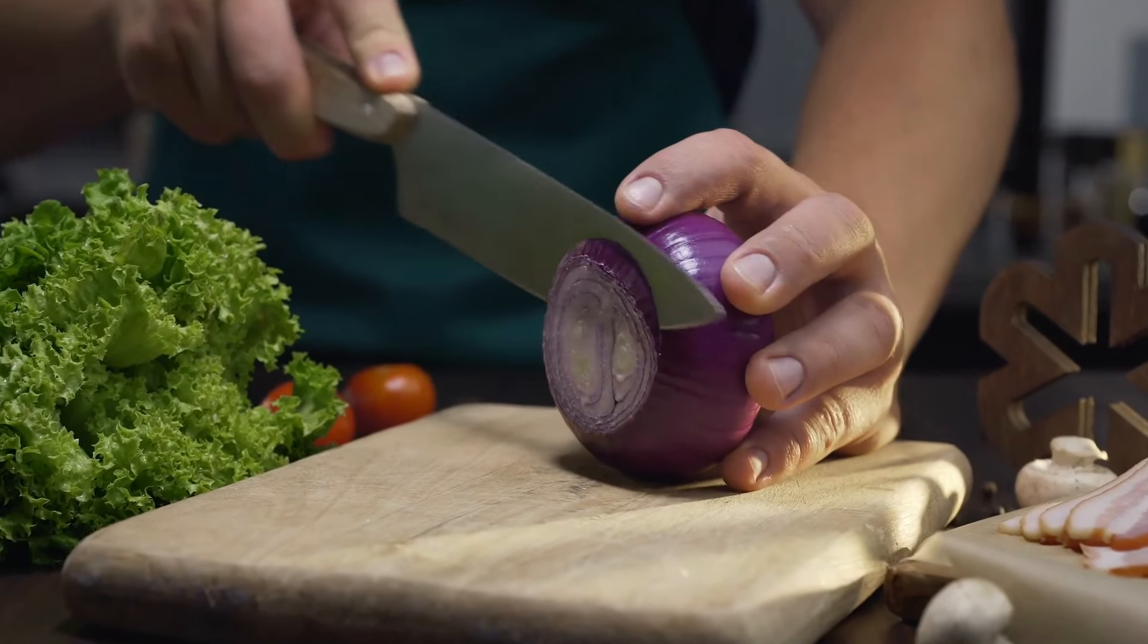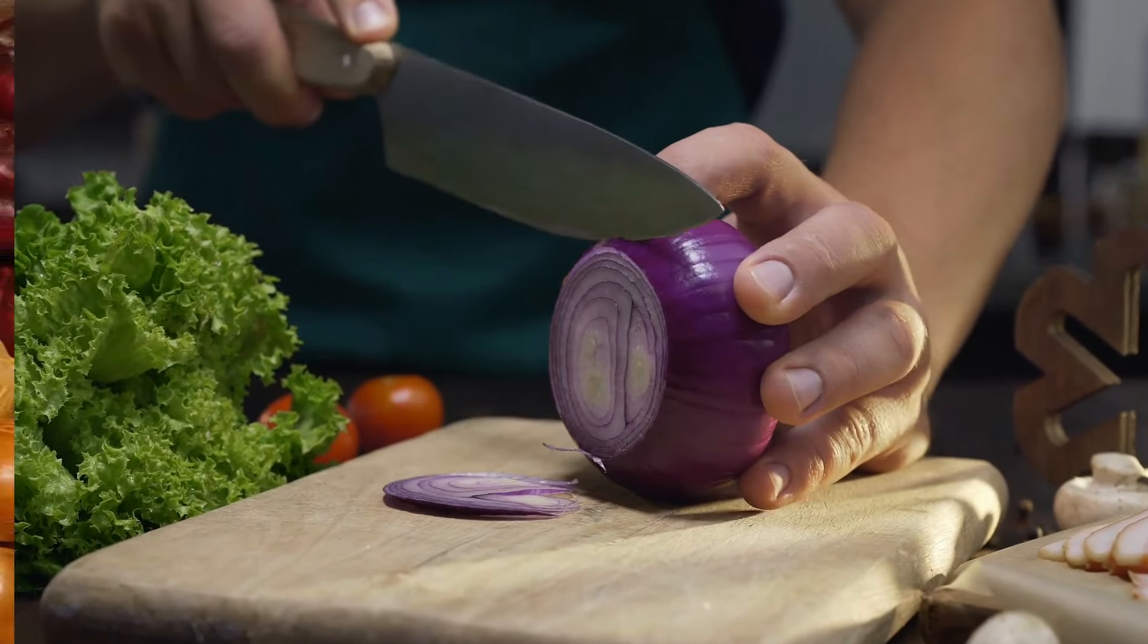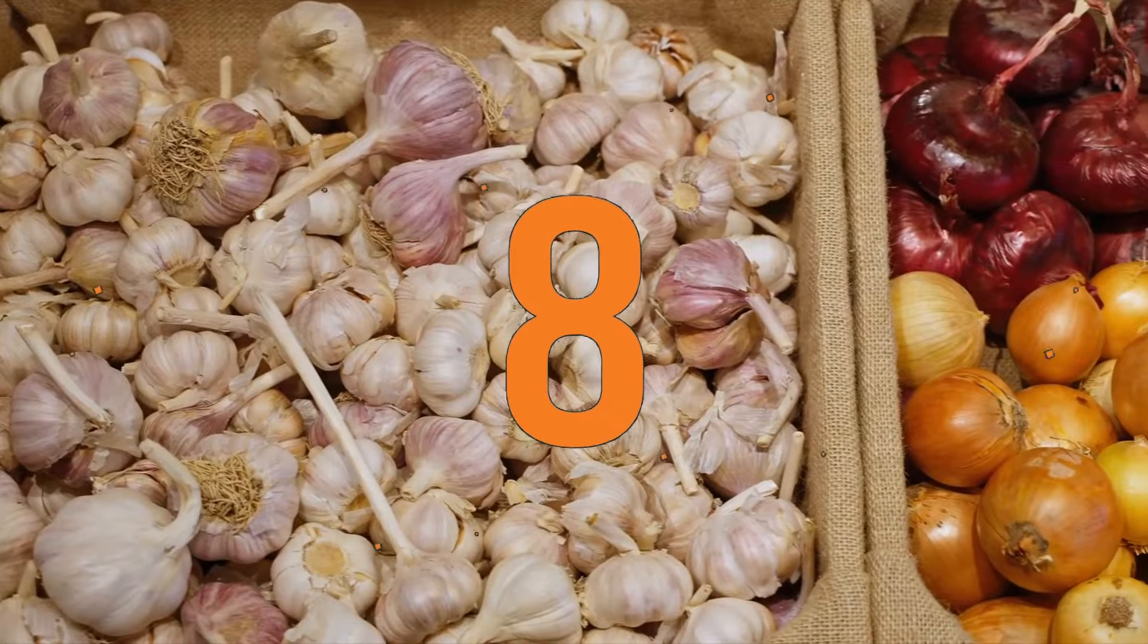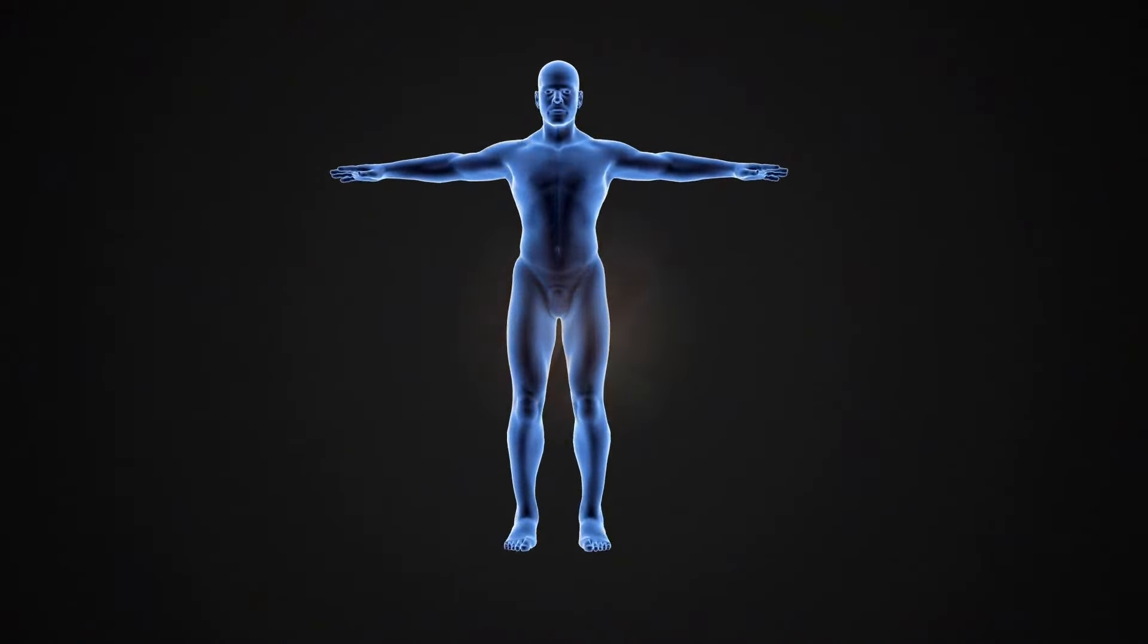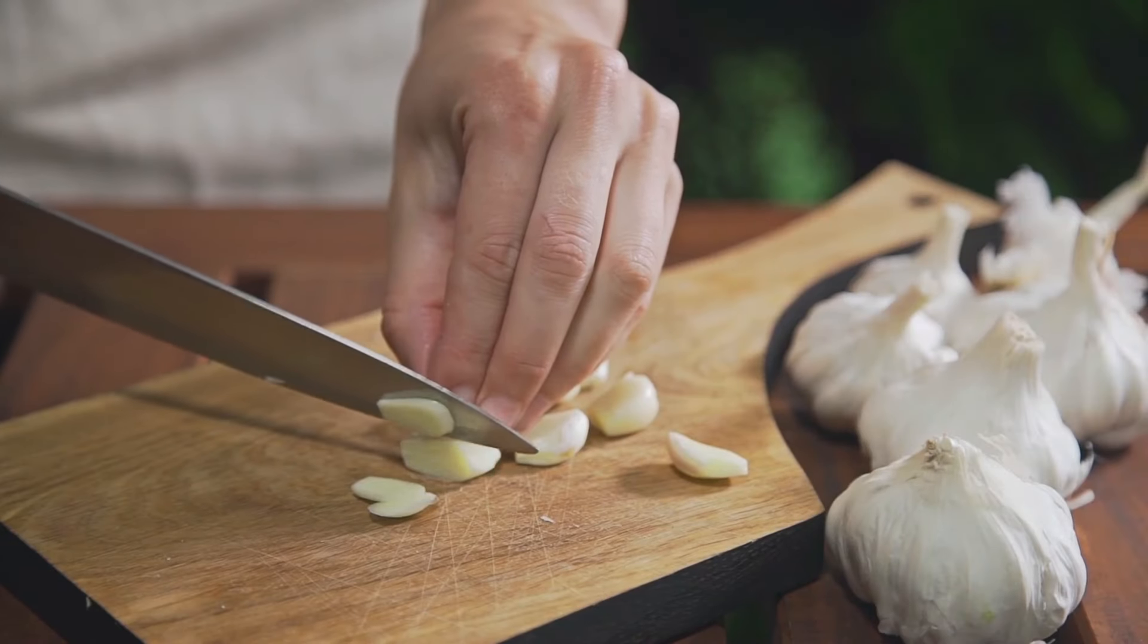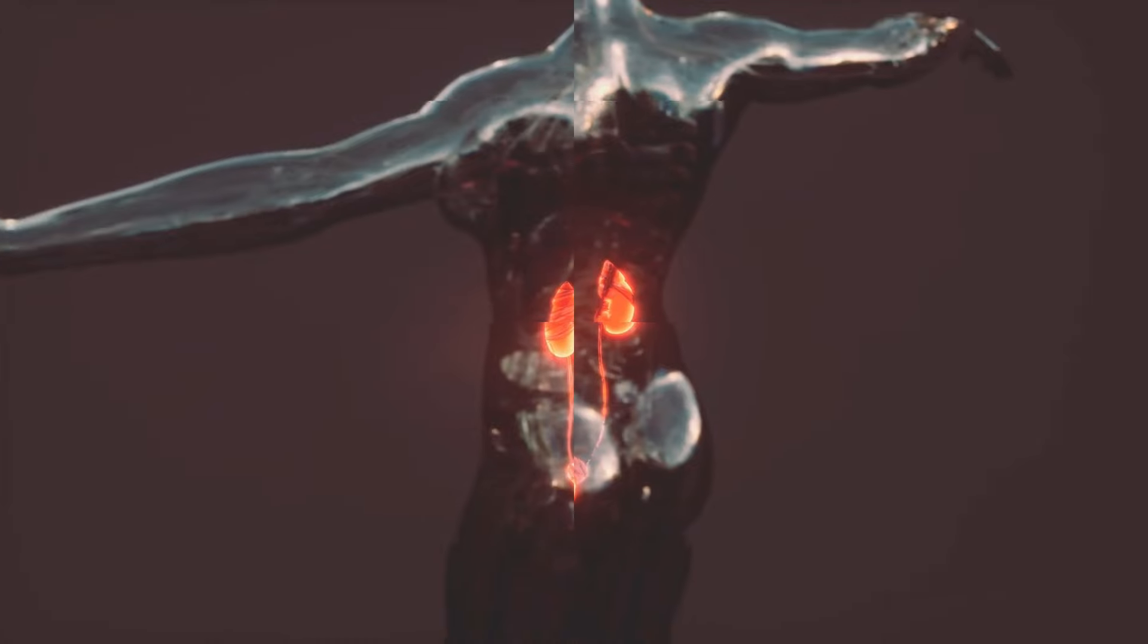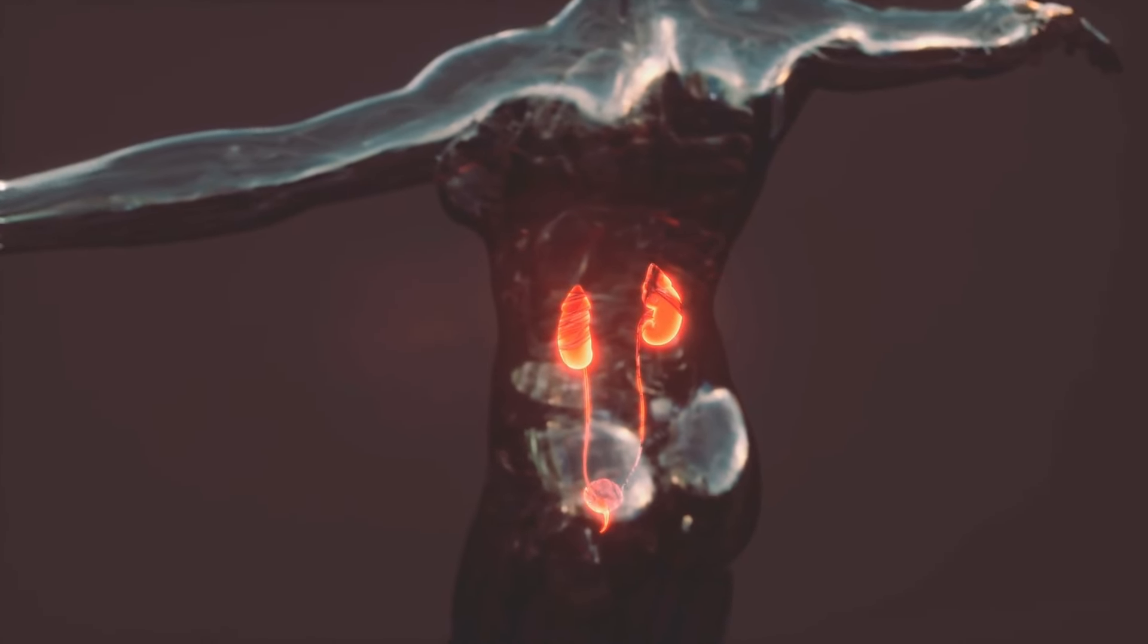Don't underestimate the power of these kitchen staples. Garlic and onions are natural diuretics, which means they help your body flush out toxins through urine. They also boast anti-inflammatory properties that contribute to overall kidney health.